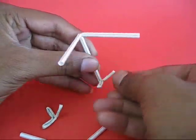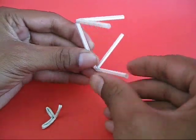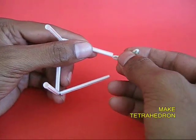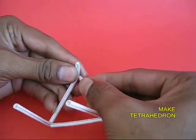Tetra means four, hedron means made of triangles. Here is a three-dimensional figure which is made of four triangles, hence the name tetrahedron.